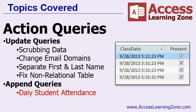Then we'll learn about append queries. Update queries change data in a table; append queries add rows onto a table. We'll make a student table with a list of students, then we'll make an attendance table. Each day, when I want to take attendance, instead of having to type in all of the students, I'll run an append query which will append all of the students into my attendance table. Then all I have to do is check the box for present. The next day, I run the append query again — it copies all the student names into the table — and again I just check who is present and who's not.